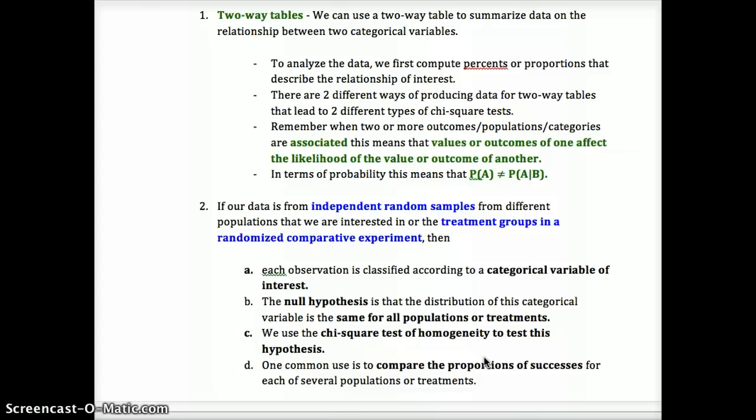We're going to have a null hypothesis that the categorical variable is the same for all populations or treatments. That could be two different populations or a treatment group and a placebo group. Then we can compare proportions of successes and see how far they are from each other to see if there is statistically significant evidence that the two distributions are not equal.